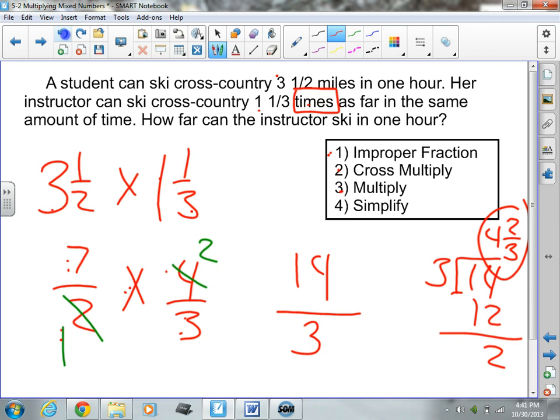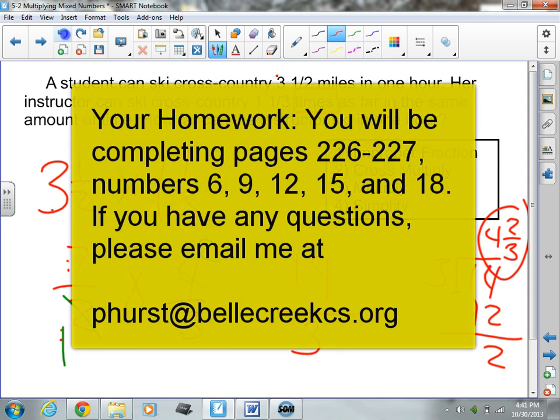Well, ladies and gentlemen, you can see that multiplying fractions and mixed numbers really is quite simple. Follow those very simple steps, and it becomes quite easy. The key is to follow those steps. Always make improper fractions, then cross-multiply, multiply, and finally simplify. Your homework tonight is going to be on pages 226 through 227. You're once again going to be doing the multiples of 3. So, you're going to be doing numbers 6, 9, 12, 15, and 18. Have a wonderful night, and we'll see you all tomorrow.